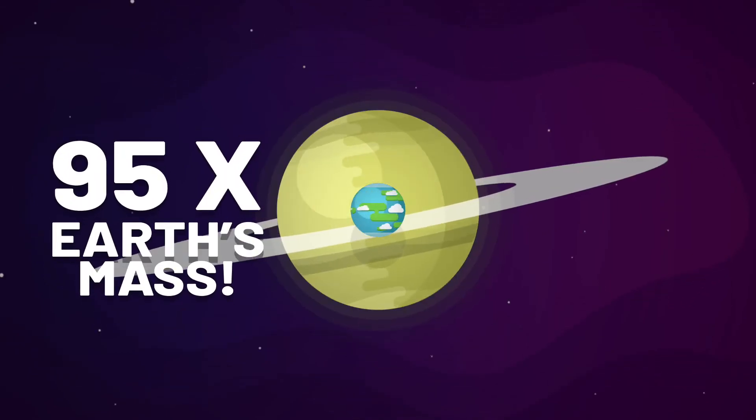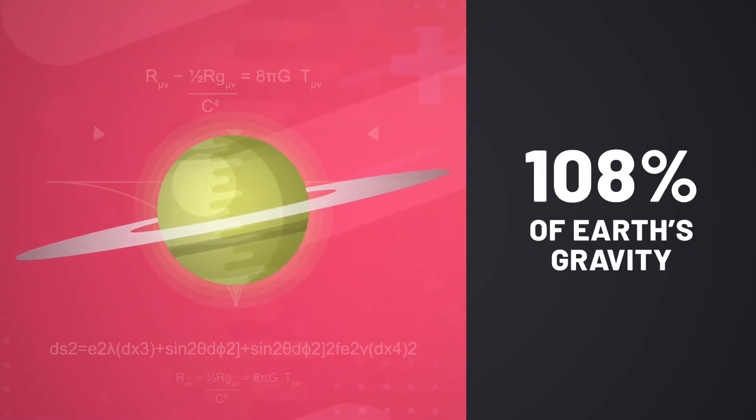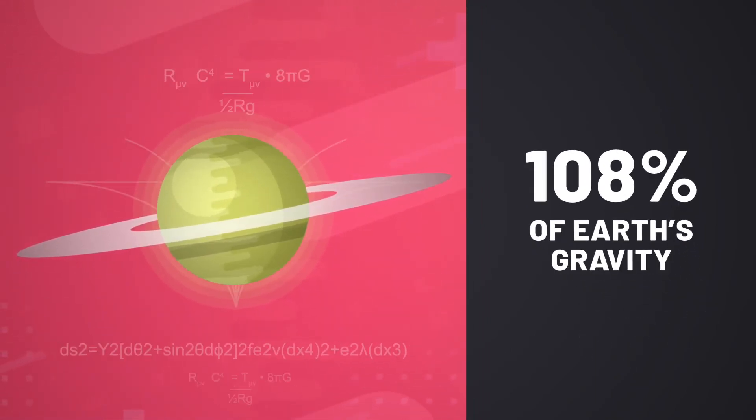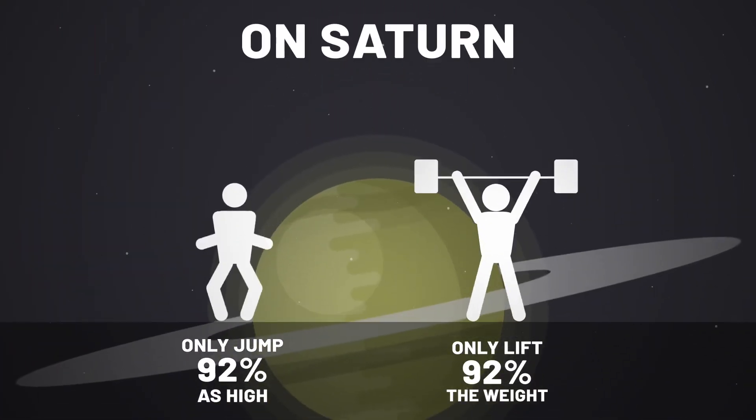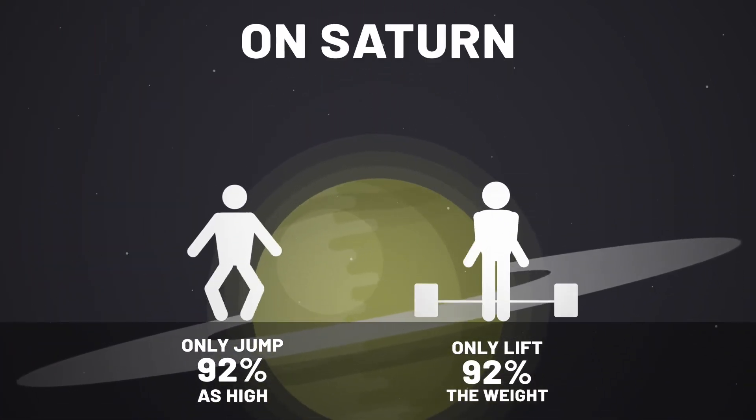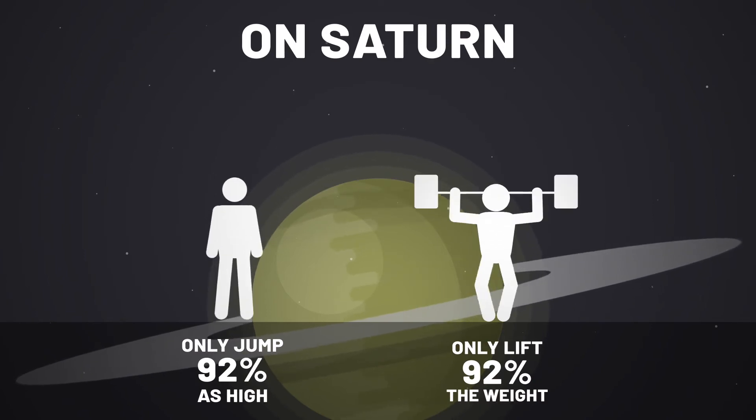Saturn is 95 times more massive than Earth. Yet its gravity is only around 8% stronger than we're used to. So, if Saturn actually had a solid surface, you'd only be able to jump around 92% as high and only lift around 92% of the weight you normally could.